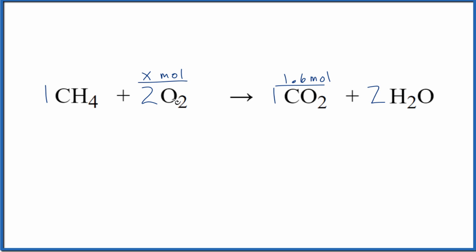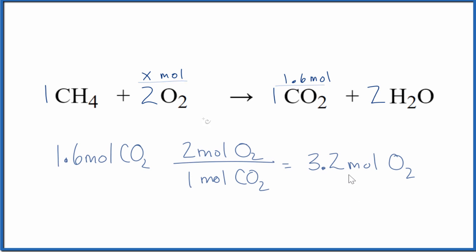If you set it up with conversion factors, that would look like this. We have 1.6 moles of carbon dioxide. We multiply that by a conversion factor. We have carbon dioxide on the top and the bottom. That'll cancel out, leaving us with moles of oxygen: 1.6 times 2 moles of O2. That gives us the same answer we got before.